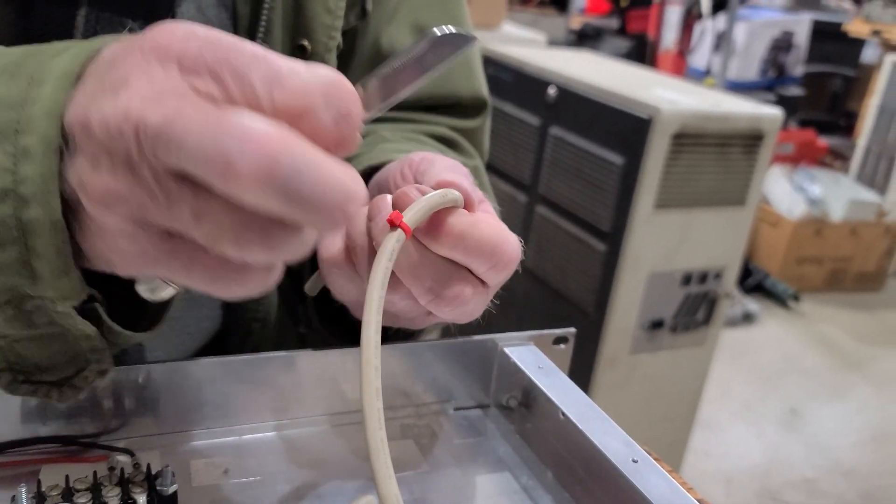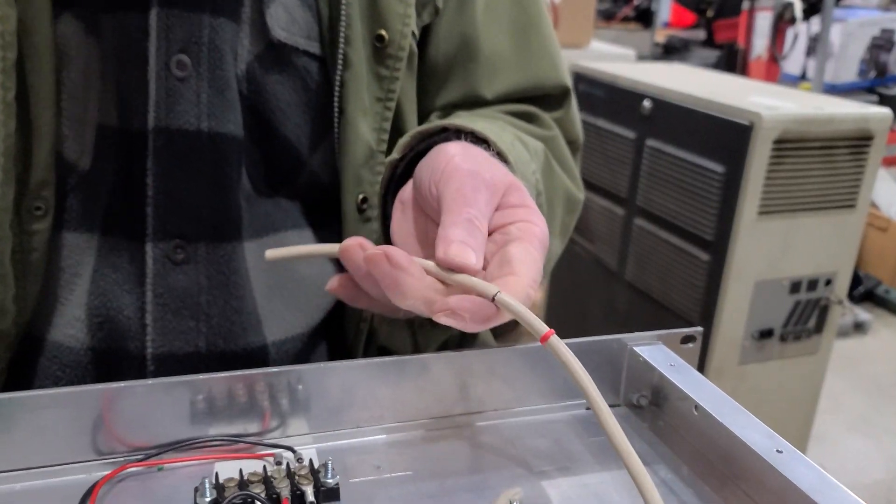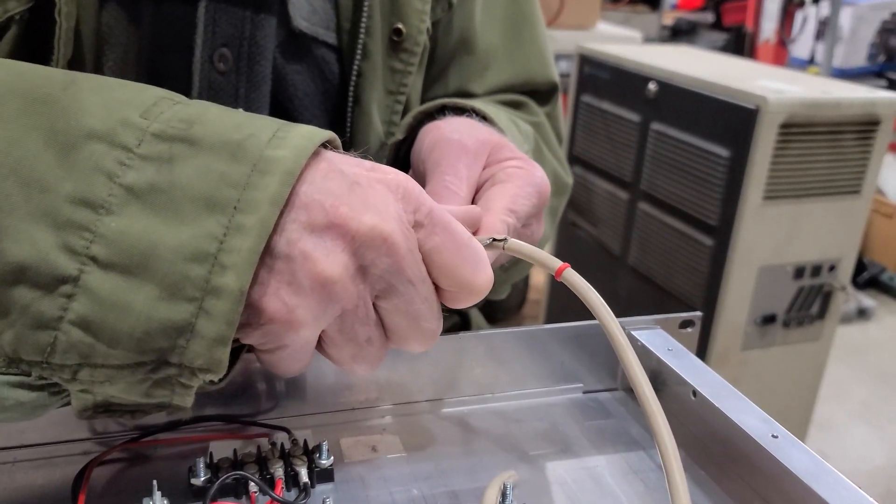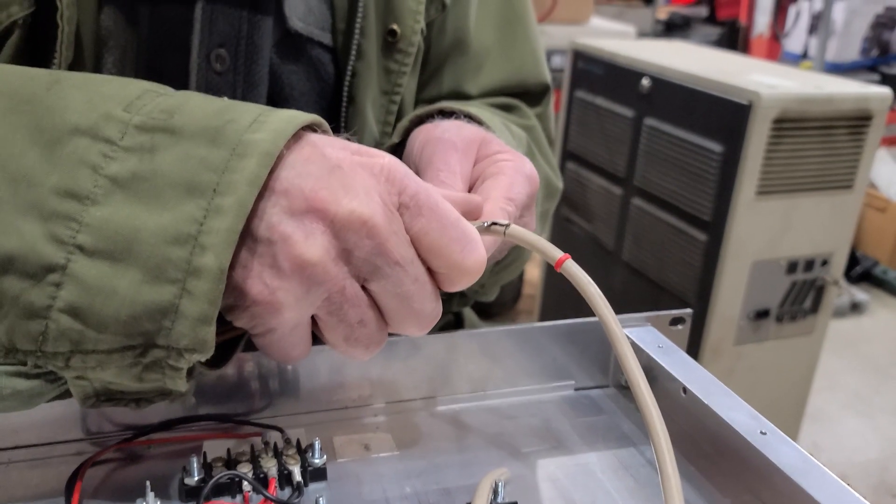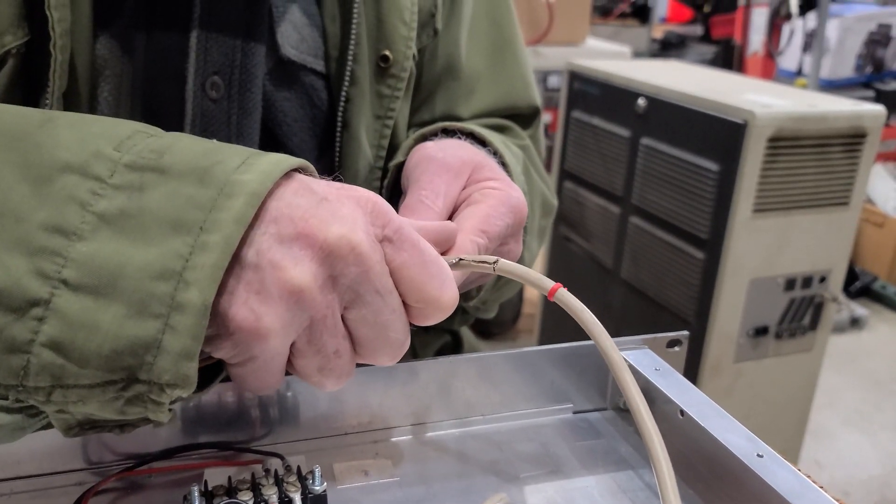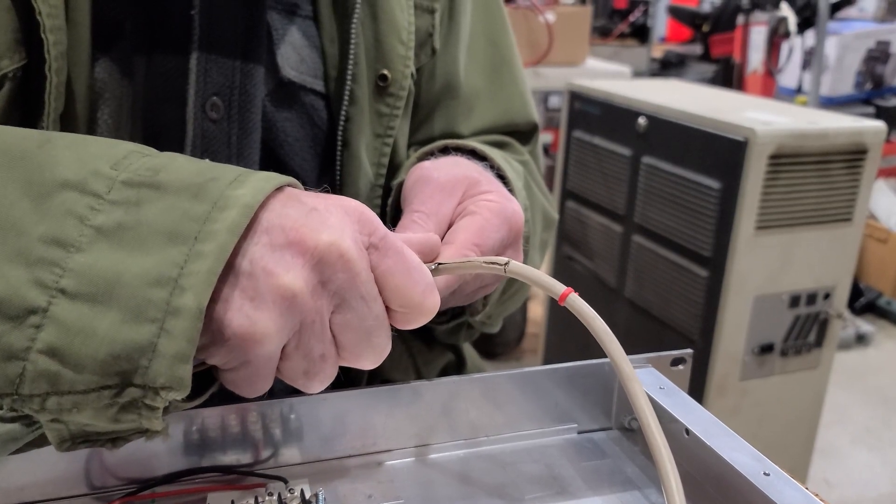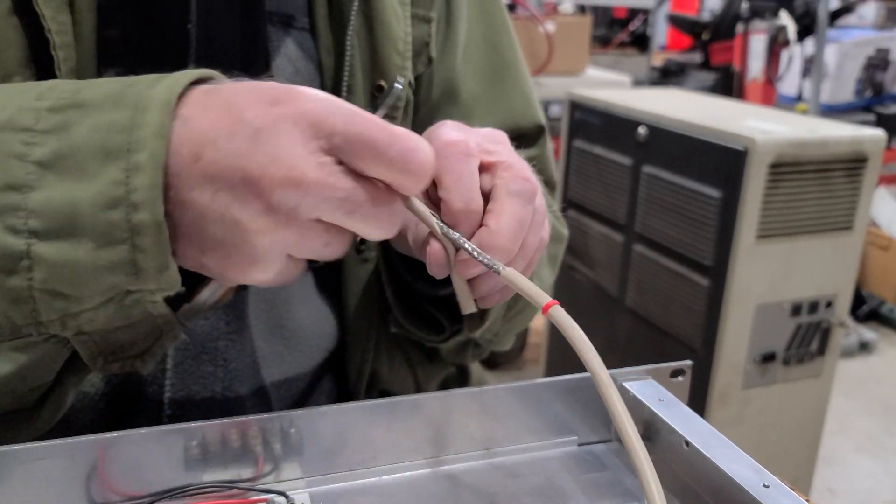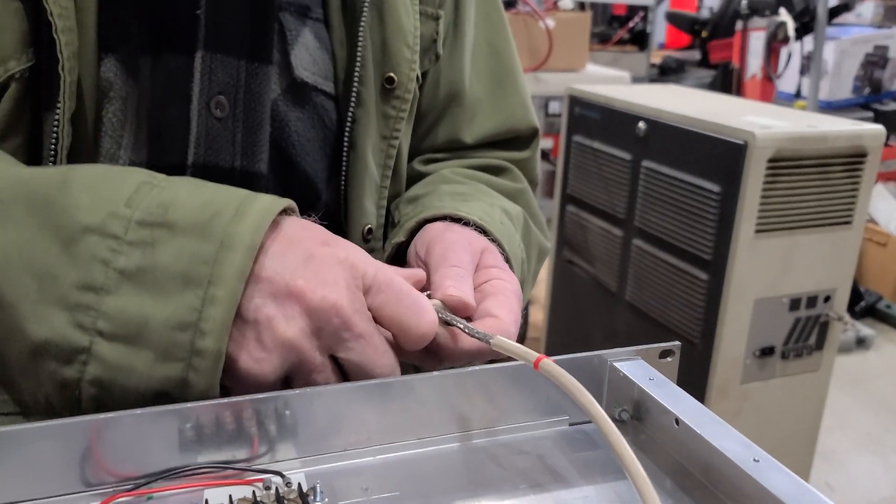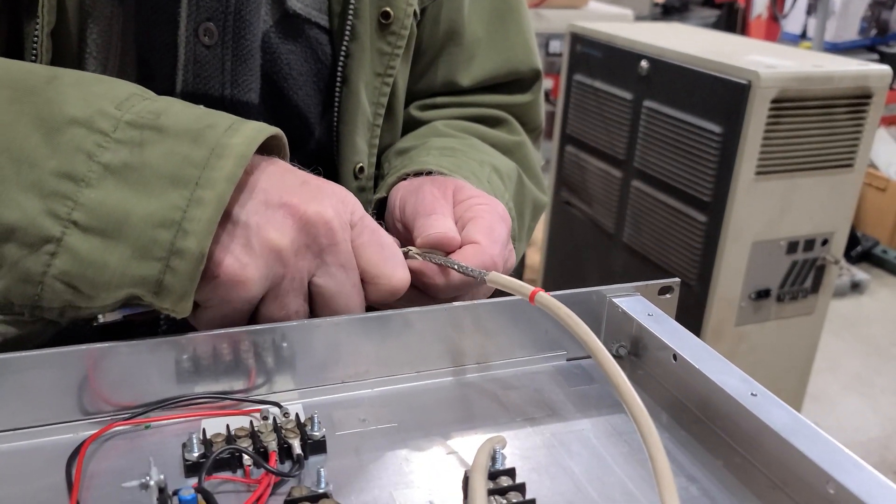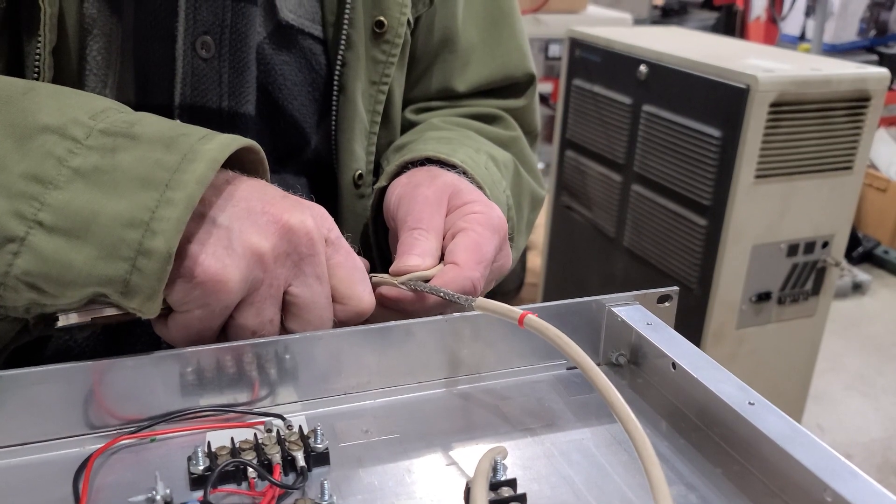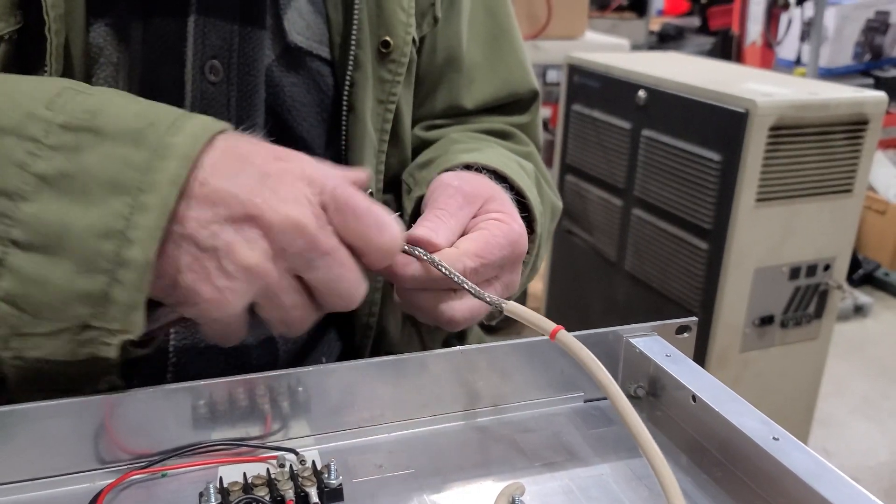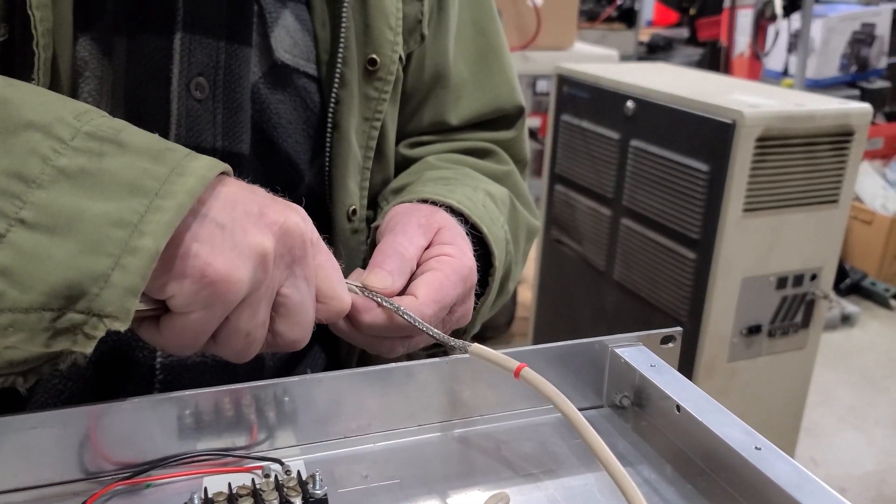We started stripping off the outer jacket to expose the shielding underneath. These are older cables - if you get some of the newer ones, they're not nearly as well shielded as the old ones were. We're taking off that outer jacket to expose the shielding, and within that shielding will be the nine wires that we need. A lot of people have some of these cables just laying around, and in this case we didn't have to buy these at all.